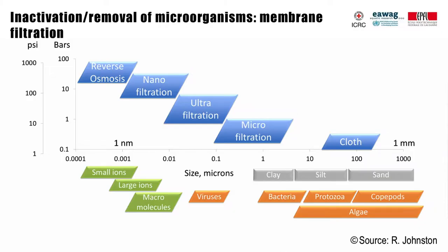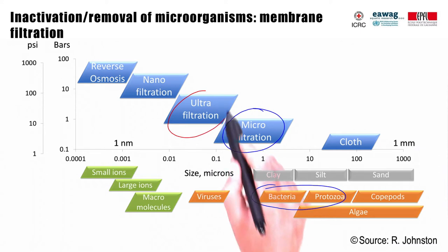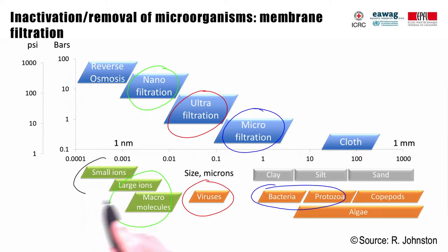During membrane filtration, water is driven by a pressure difference between the feed water and filtrate through a filter with pores of a defined size range. Usually polymeric membranes, or sometimes ceramic membranes, are used. Microfiltration has pores in the size range of bacteria and removes them and particulate matter by size exclusion. Ultrafiltration membranes are tighter and also remove viruses, which are 20 to 80 nm in size. Nanofiltration requires considerably higher pressure as the pores are smaller, but is capable of retaining micromolecules and larger ions. Small ions such as salt ions can be removed by reverse osmosis, requiring even higher pressure.